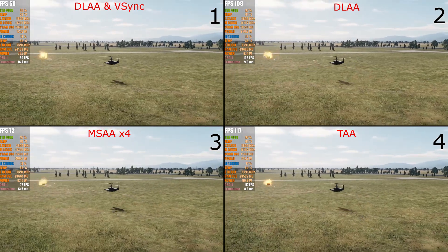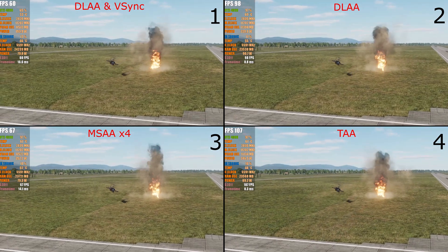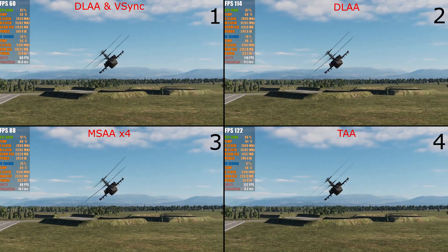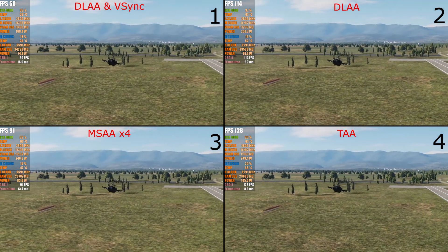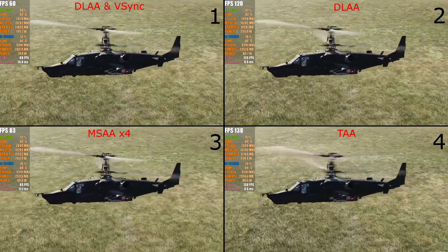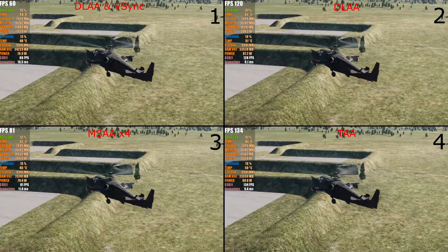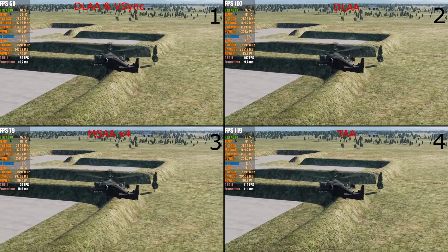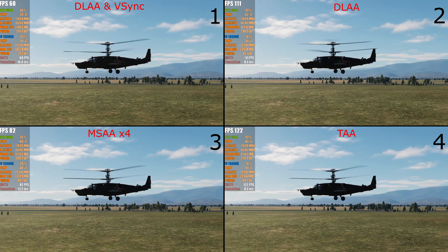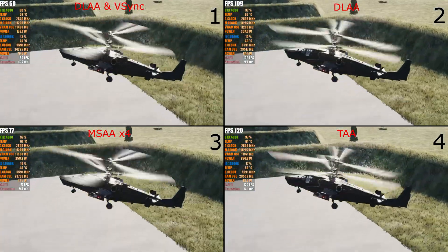DLAA and V-sync is the way to go for me because I know I'll never drop below 60 frames per second. My monitor is 5120 by 1440 at 120Hz, but I can't maintain above 120 frames per second all the time with DLAA. When it drops beneath that refresh rate of 120, that's when we get stutters — and we don't want stutters in a flight simulator; we want it smooth as butter. The only way to get that is with V-sync. People worry about frame time, but trust me — 16.6 milliseconds is more than enough.